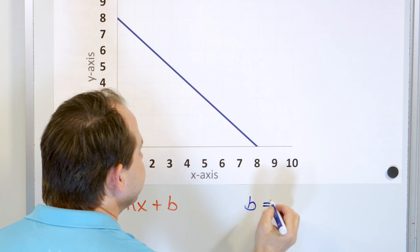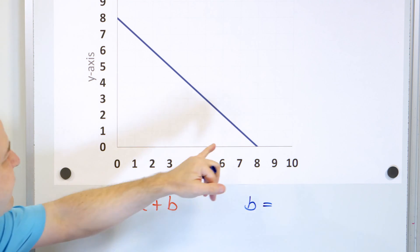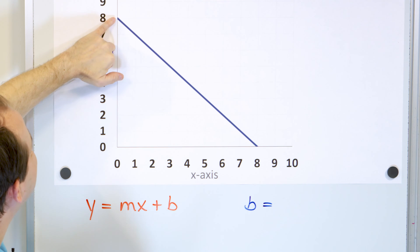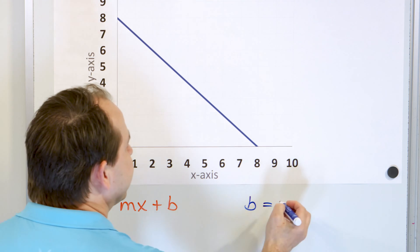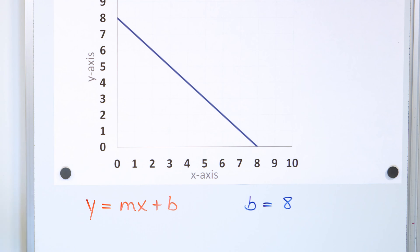Now, b is the y-intercept. What does that mean? It means where does the line cross the y-axis? Here it crosses up at 8, zero comma 8. So the y-intercept b is called 8. So we now know what this number is in the equation of a line.